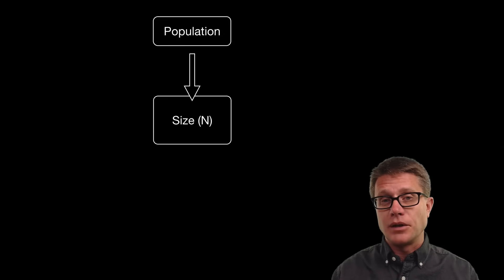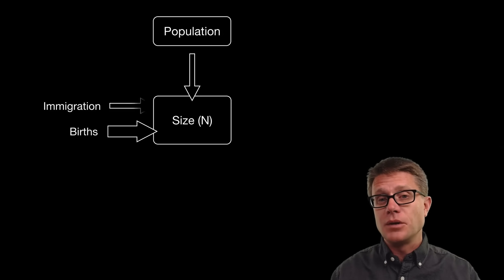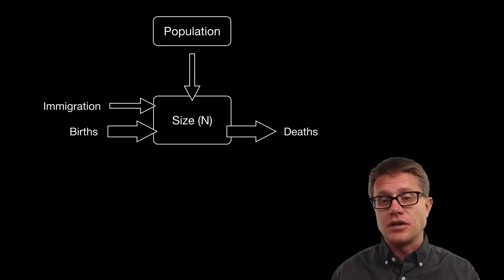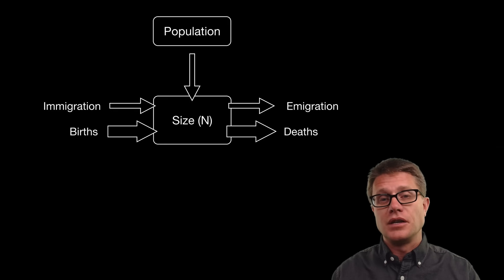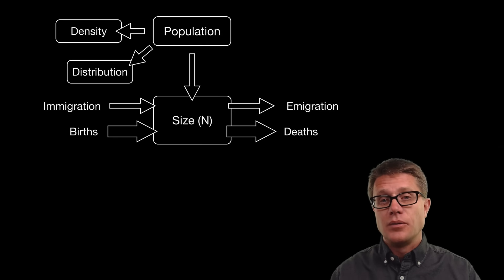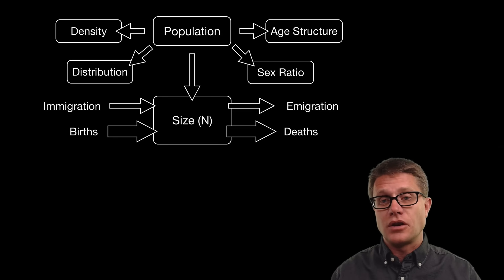How do we increase the size of a population? Through births and immigration, new individuals coming into the population. Likewise how do we decrease it? Through deaths and emigration. These things contribute to what is called the intrinsic growth rate. It is not the only characteristic. We also have the density and distribution, the sex ratio and the age structure as well.